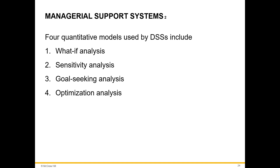DSS uses four quantitative models: what-if analysis, to check the impact of a change in a variable on the model; sensitivity analysis, which is a specific type of what-if analysis that studies the impact of one variable on others when one variable is changing repeatedly; goal-seeking analysis, which finds the input necessary to achieve a goal; and optimization analysis, which finds the optimum value for a target variable by repeatedly changing other variables.